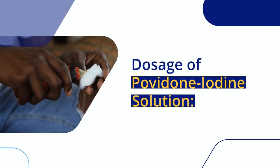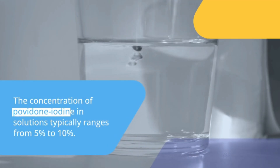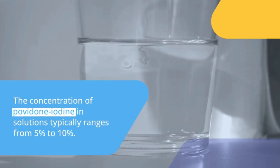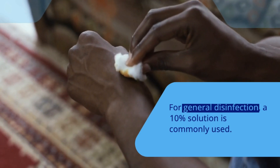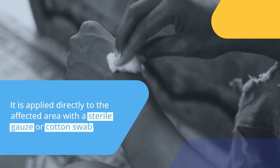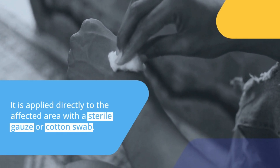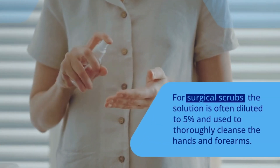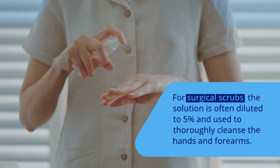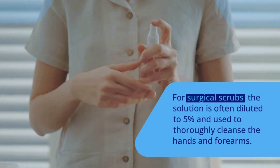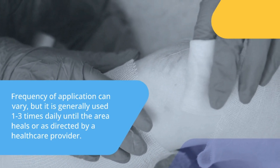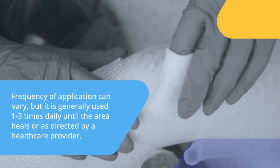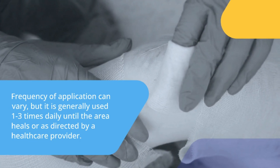Dosage of povidone iodine solution. The concentration of povidone iodine in solutions typically ranges from 5% to 10%. For general disinfection, a 10% solution is commonly used, applied directly to the affected area with a sterile gauze or cotton swab. For surgical scrubs, the solution is often diluted to 5% and used to thoroughly cleanse the hands and forearms. Frequency of application can vary, but it is generally used 1 to 3 times daily until the area heals or as directed by a healthcare provider.